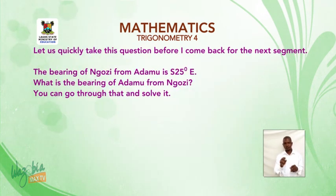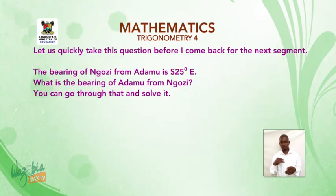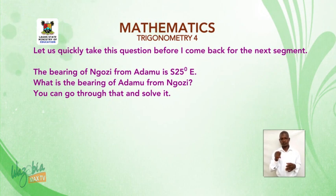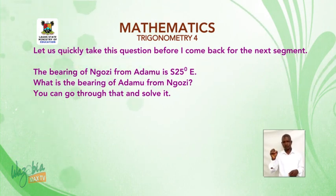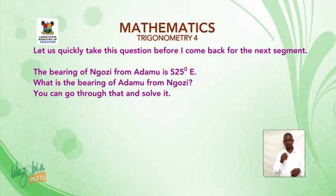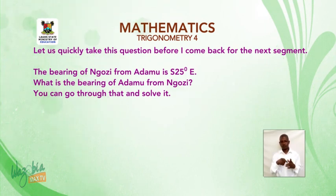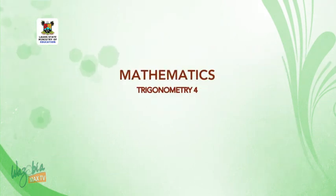Let's quickly take this question before the next segment: the bearing of Ngozi from Adamu is 25 degrees east of south. What is the bearing of Adamu from Ngozi? You can work through that. Thank you very much.